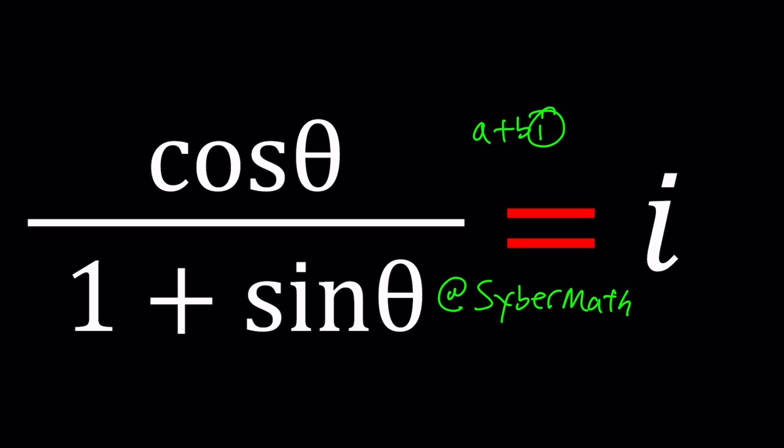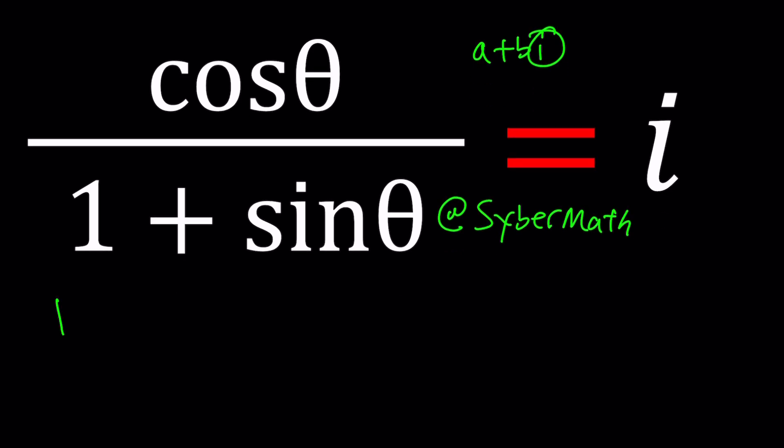First method. For my first method I want to simplify the trigonometric expression on the left hand side. By using double angle formulas we are able to simplify this. Now some people might be thinking, okay why don't you multiply by the conjugates? Yes,